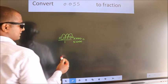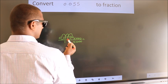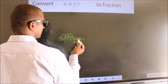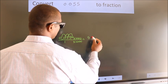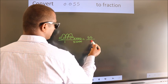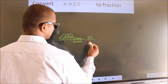Next, 0.055 into 1000, we get 55. In the denominator, 1 into 1000, 1000.